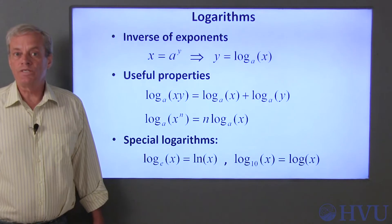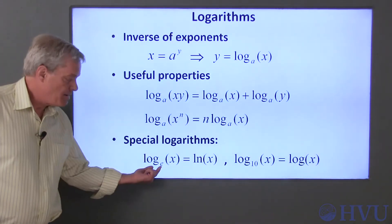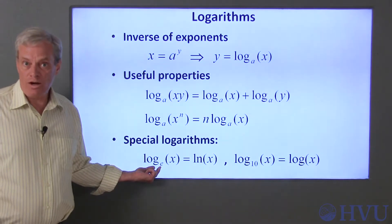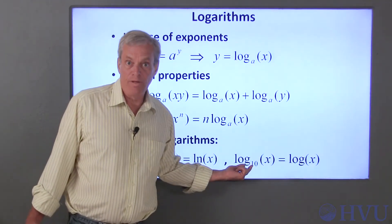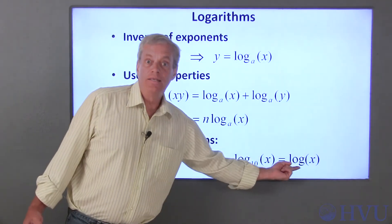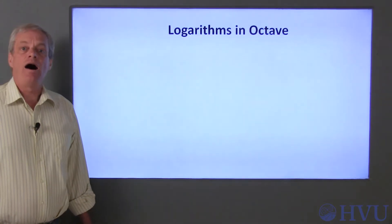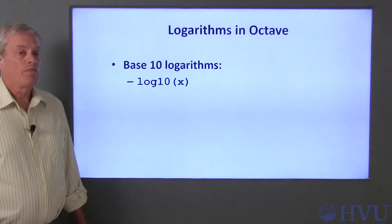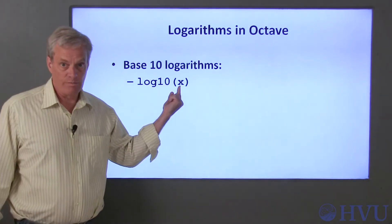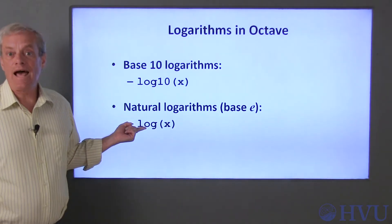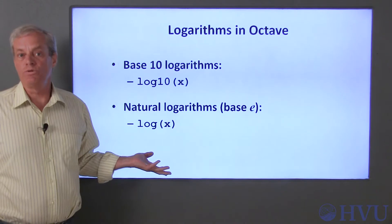Finally, there are a few choices of bases for logarithms that are given special names. A logarithm whose base is the number e is called a natural logarithm and it's generally indicated as ln. A base 10 logarithm is denoted by log, typically with no base indicated by a subscript. Octave has two functions that calculate logarithms. The log10 function returns the base 10 logarithm of its argument. The log function returns the natural logarithm of its argument. These tend to be the most commonly used logarithms.